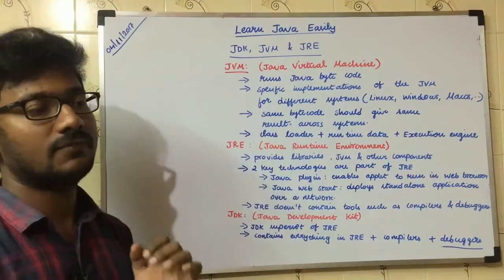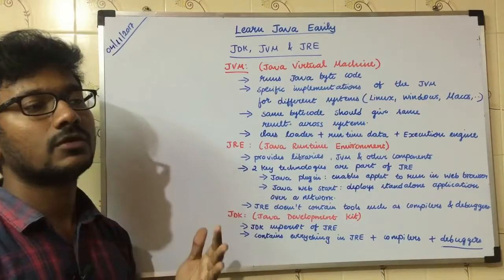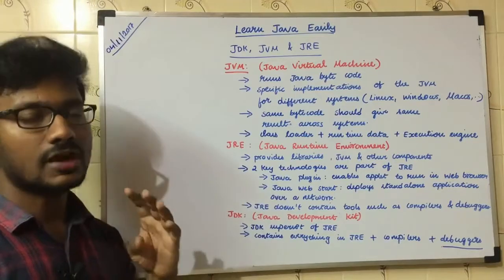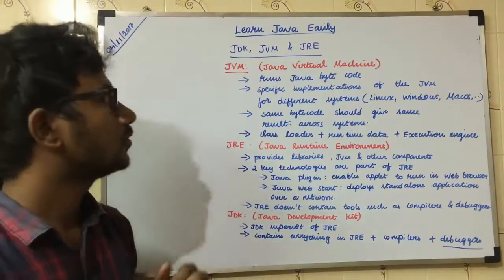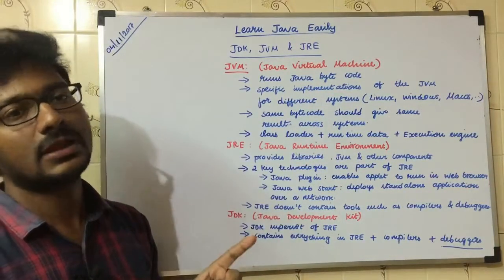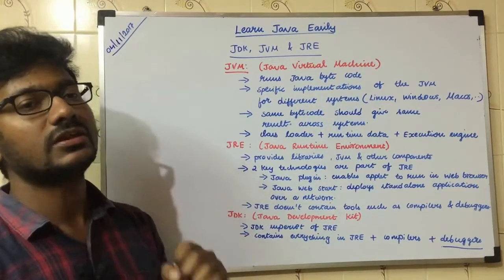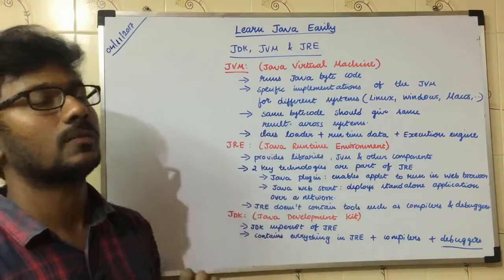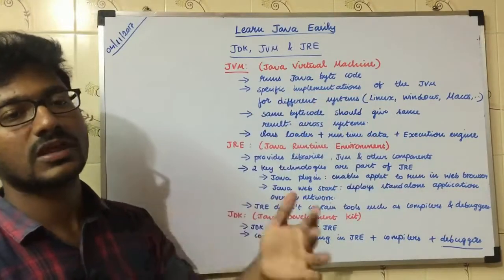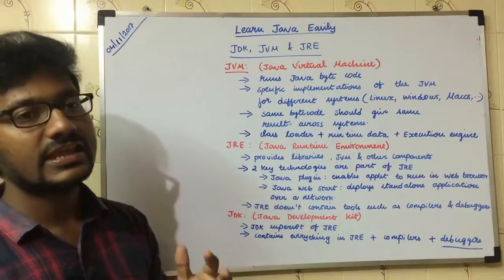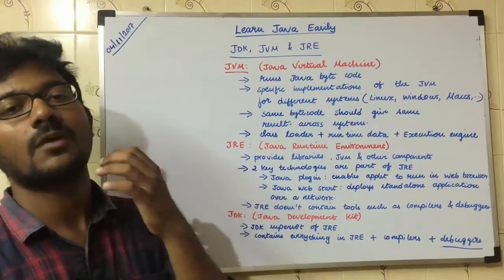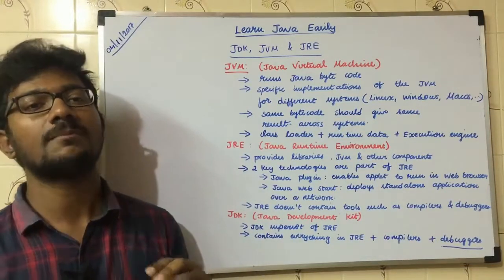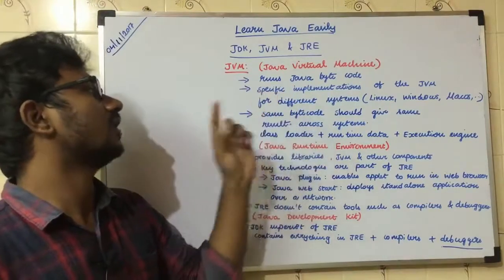The JVM can read and run that bytecode. For example, if you have a handheld phone, a friend has a tablet, and another friend has a computer — every system has its own Java Virtual Machine. That JVM handles all Java-related things the same way. This is what makes Java a platform independent language. A source file can run on any platform and give the same output. That is the power of Java and the Java Virtual Machine.